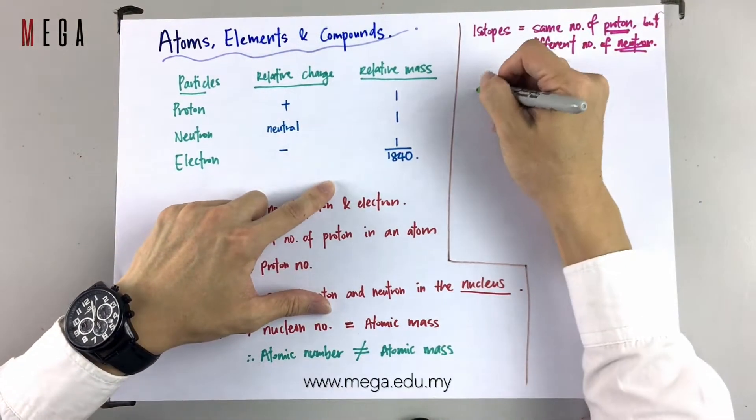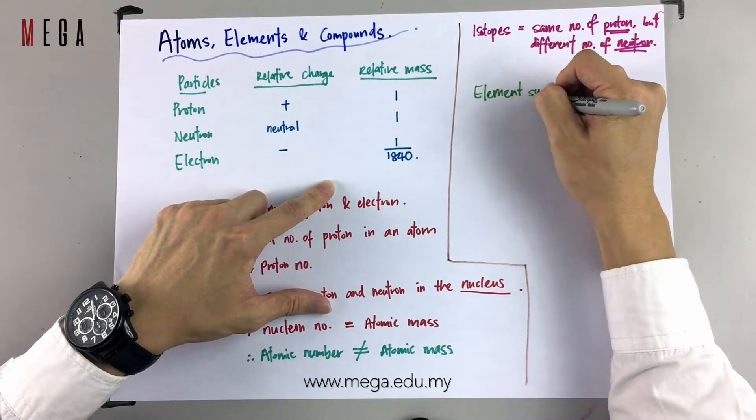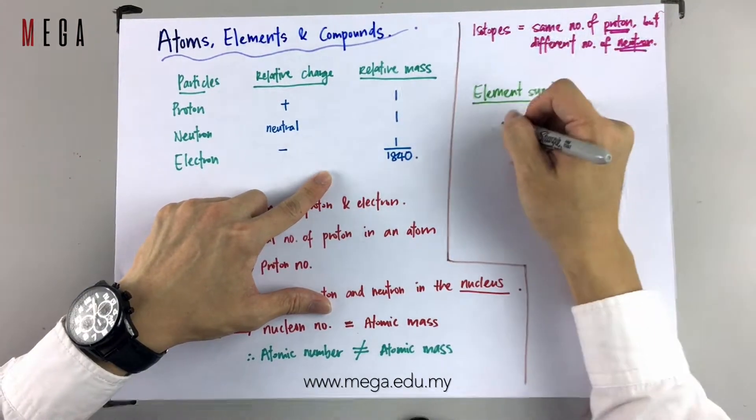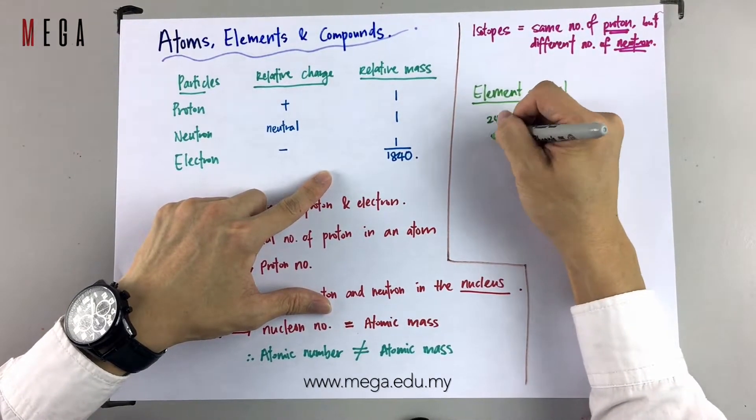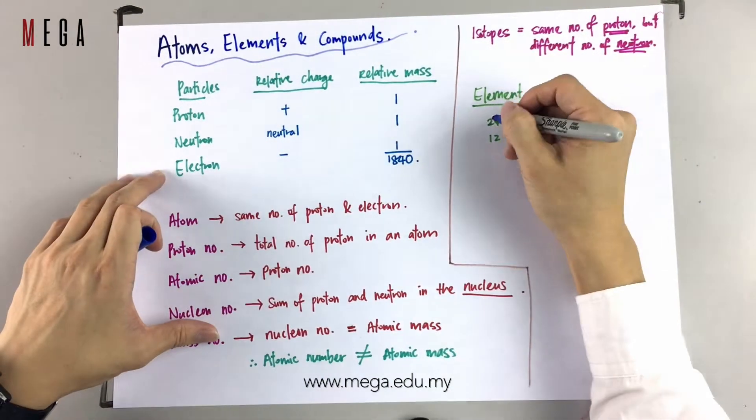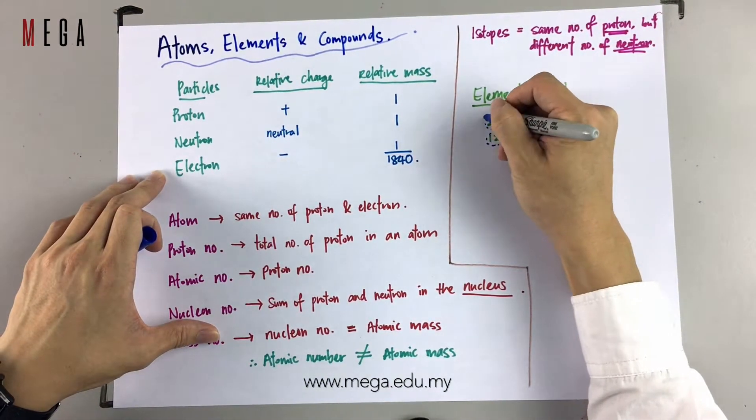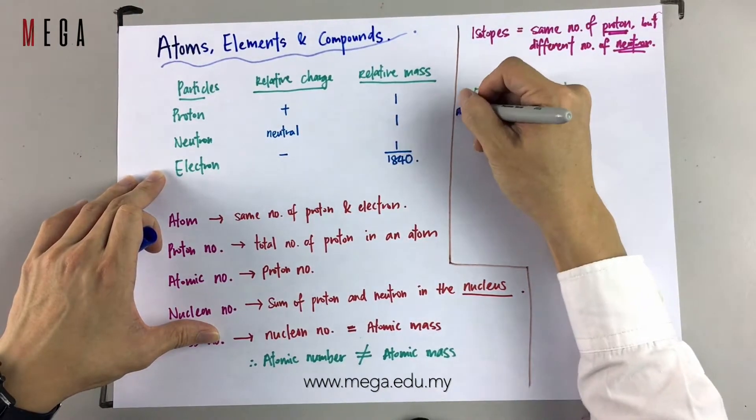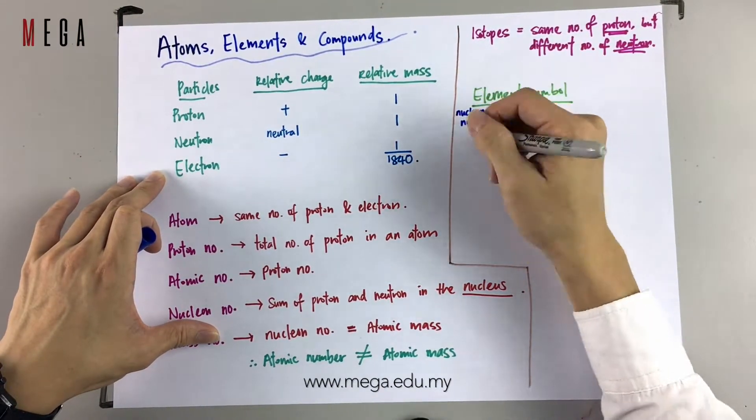Here is an example of element symbol notation. The number written on the top left-hand corner stands for nucleon number. The number written at the bottom left-hand corner stands for proton number.